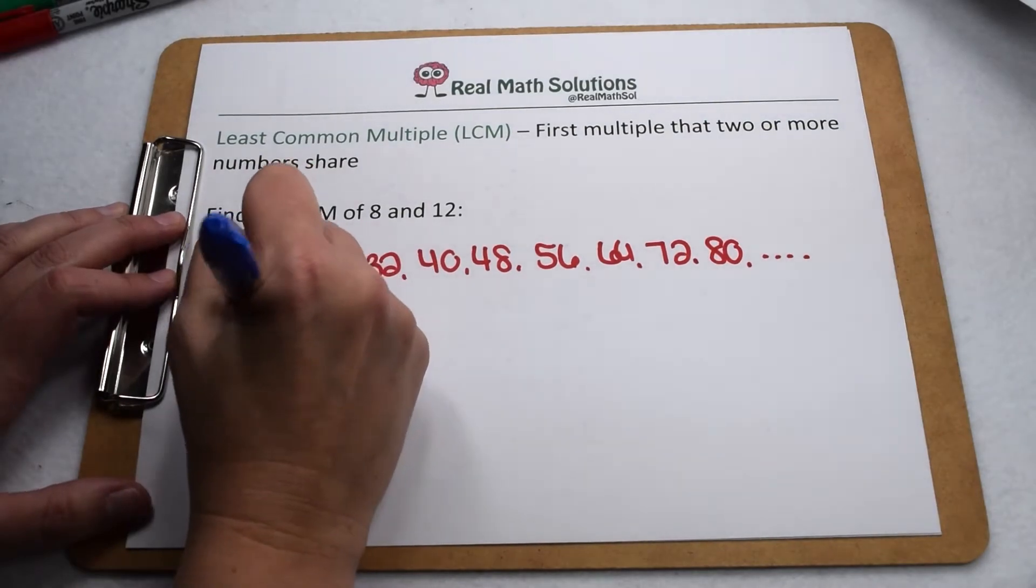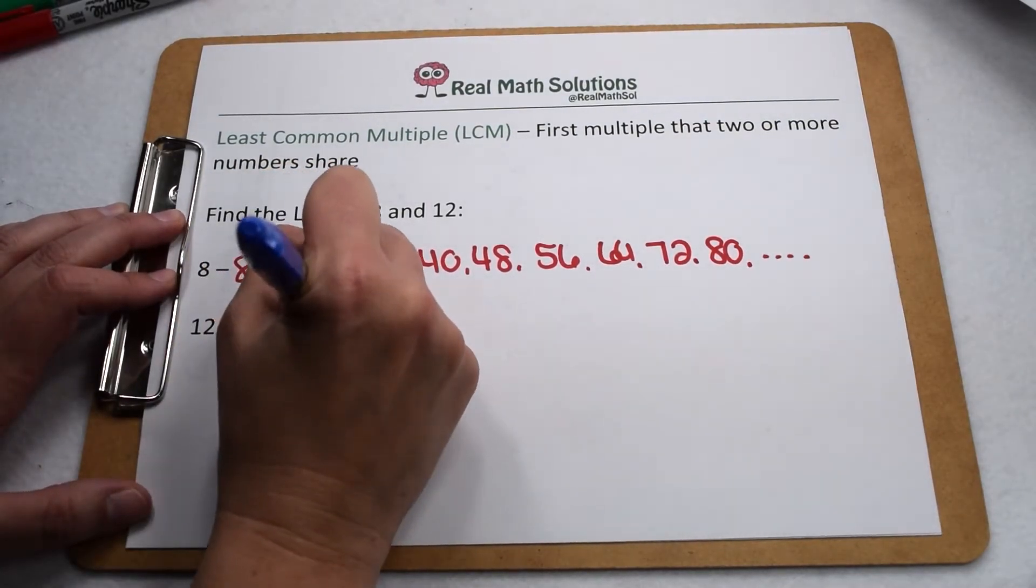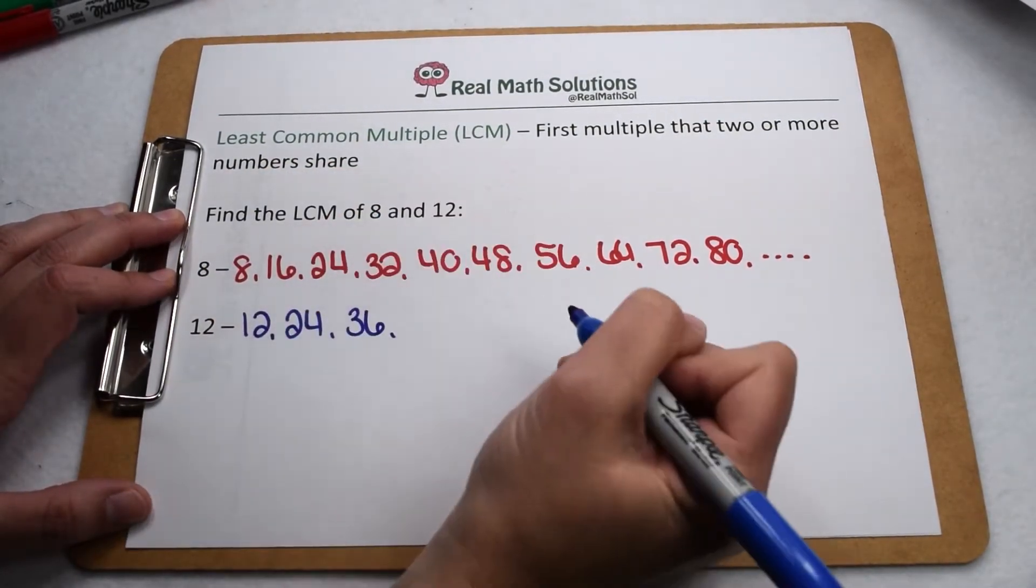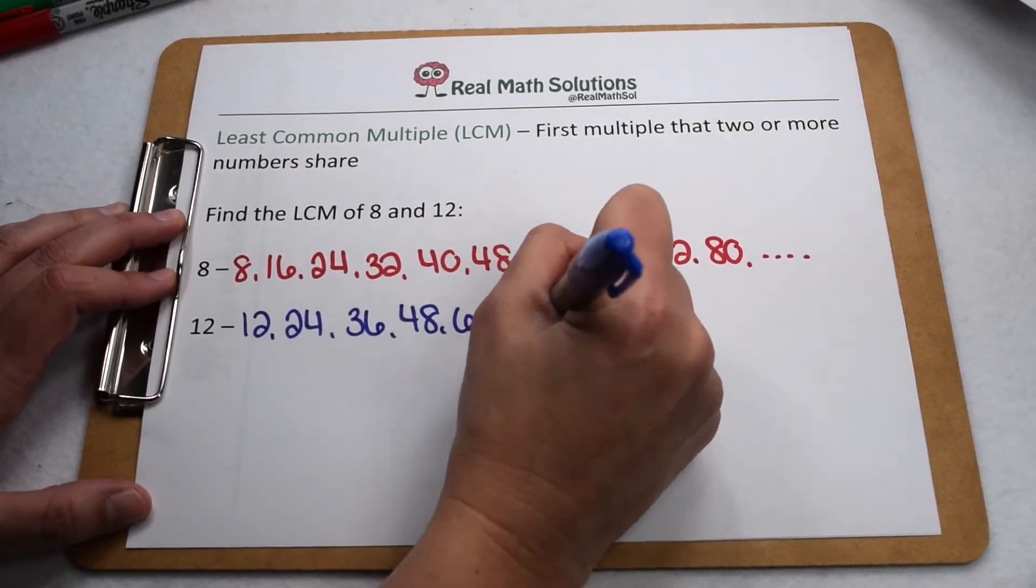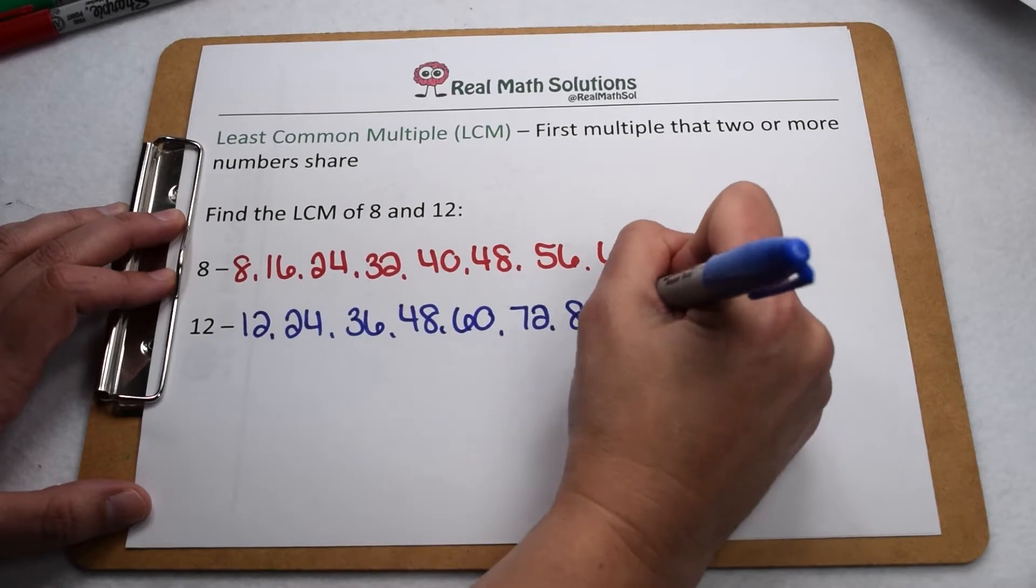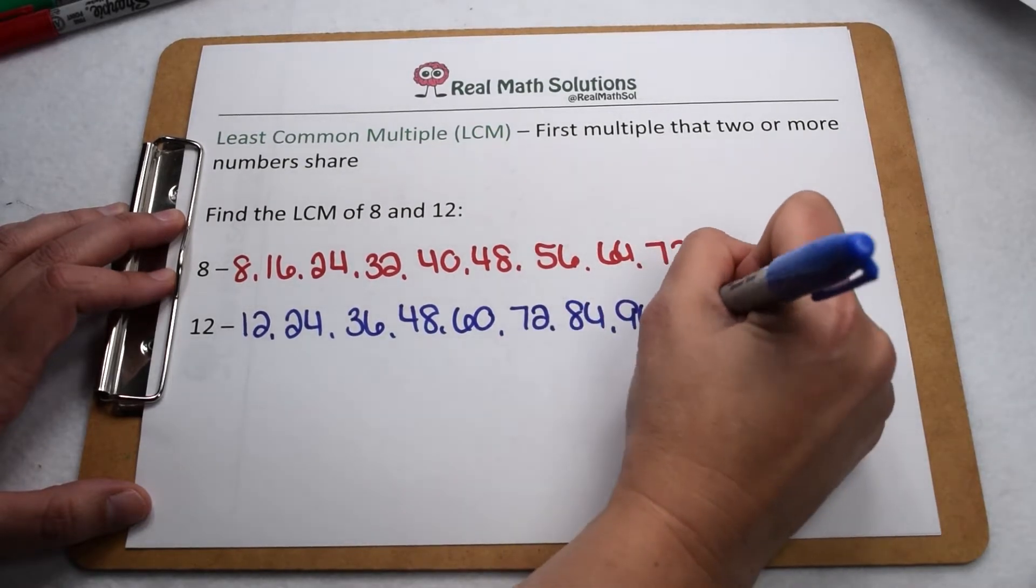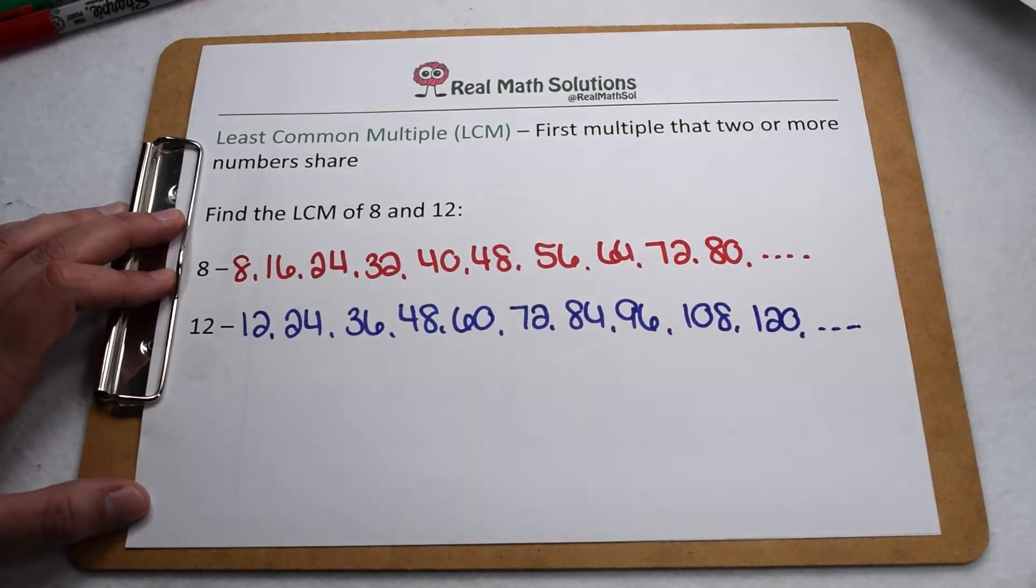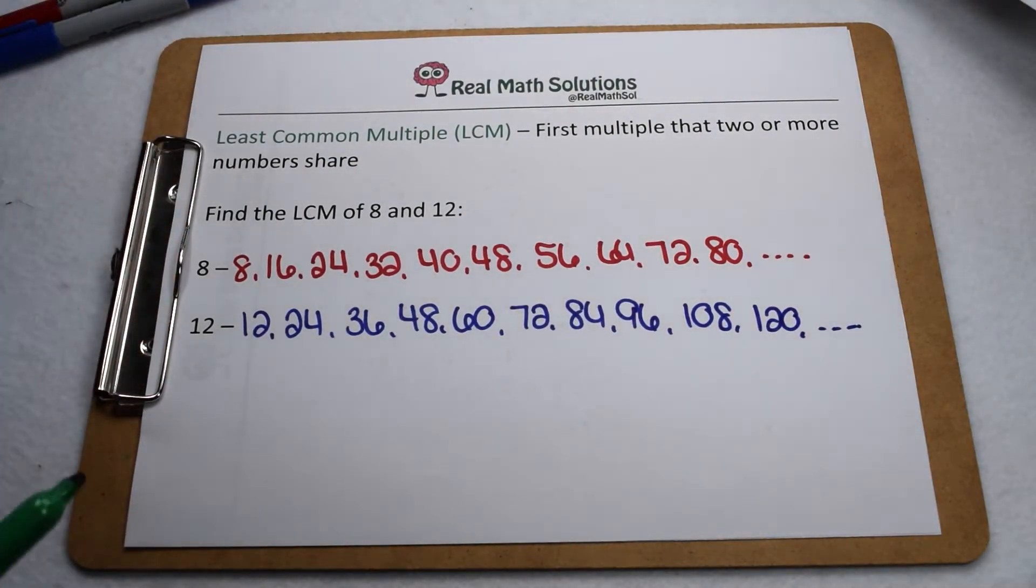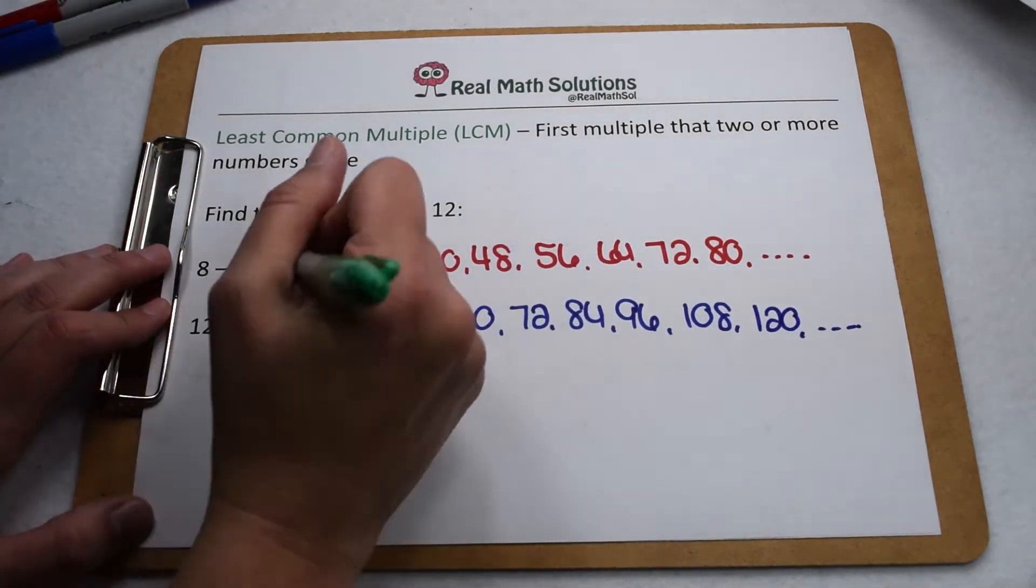Listing out multiples of 12, we have 12, 24, 36, 48, 60, 72, 84, 96, 108, and 120. Again, we know they go on from there, but we should have something in common with 8 by now.